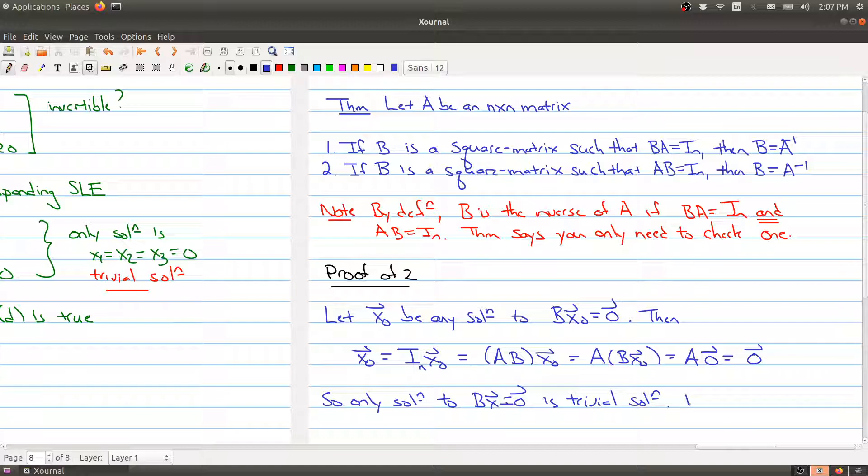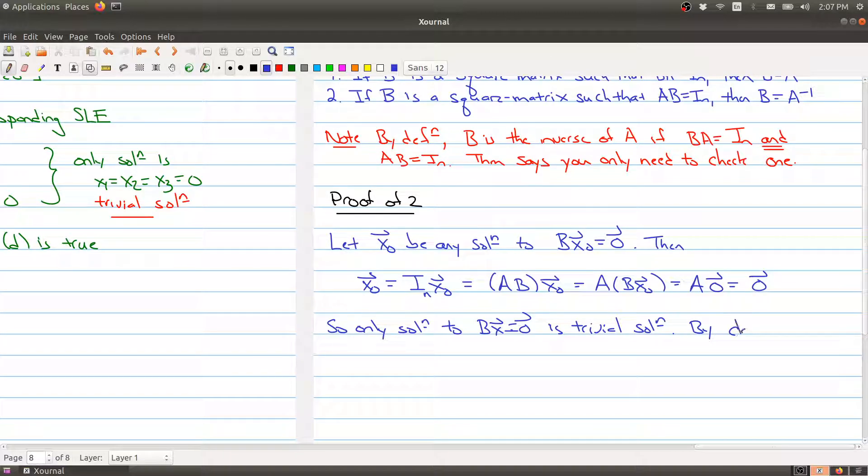So only solution to Bx equals 0 is trivial solution. By the classification theorem, what this tells me is that B is invertible. We are using the power of the classification theorem to prove this. Then we know that B inverse exists, so then A, which is equal to A times B times B inverse, is equal to A times—oops—A times B times B inverse, this is equal to the identity times B inverse, which gives me B inverse.